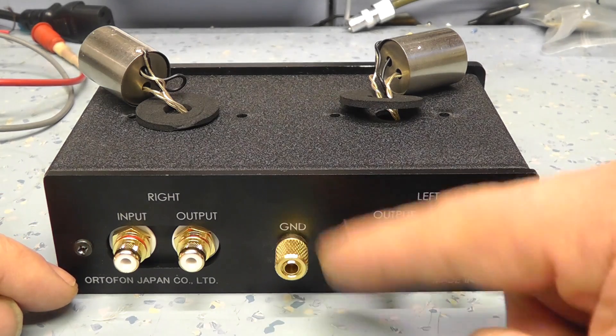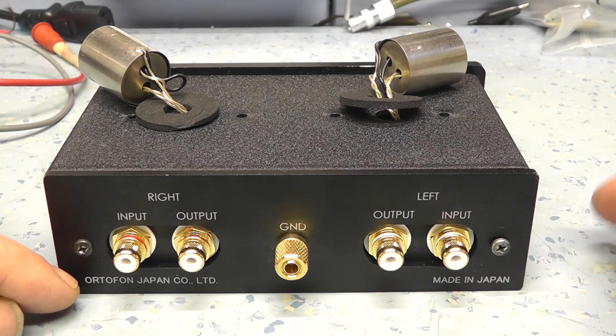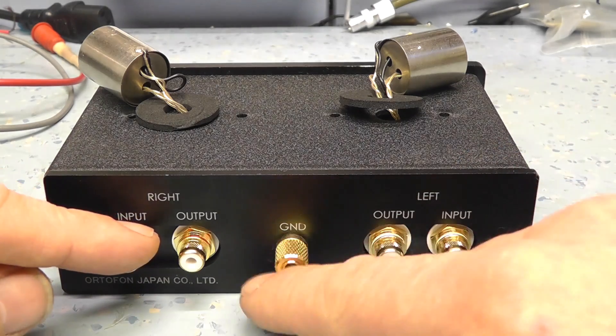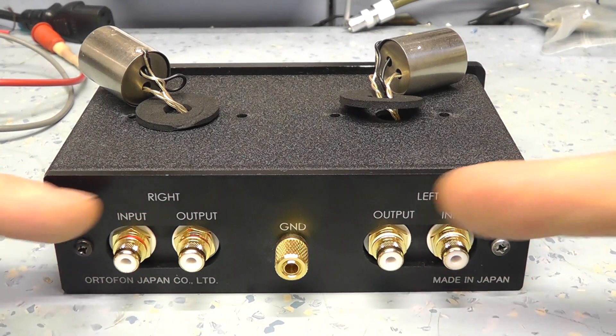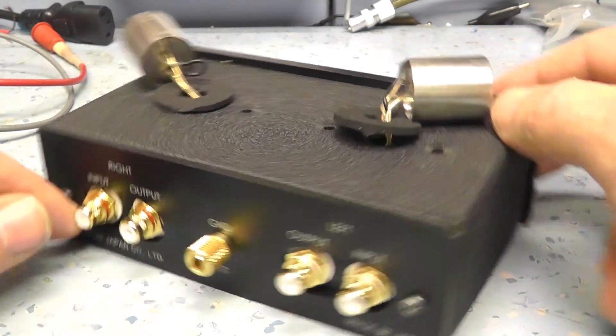Ground connection is here for the tonearm, which grounds the tonearm connection. So basically you've got your tonearm input comes there and there and your ground connections there and the outputs go to your moving magnet input of the amplifier.